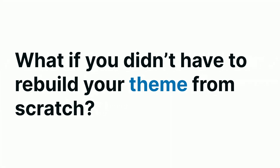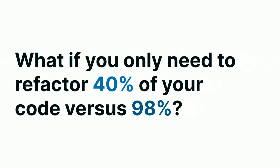What if you didn't have to rebuild your theme from scratch? What if your PHP template files just worked, and you only needed to refactor 40% of your code instead of 98%? Form API is pretty much the same thing in Drupal 7 — if you've got a form, you're moving it to form classes. How much time could you save if you didn't need to touch every single line of code? That's the premise. Retrofit provides compatibility layers that can run legacy Drupal code.